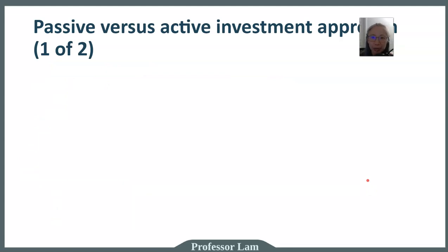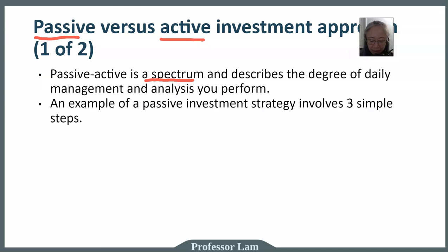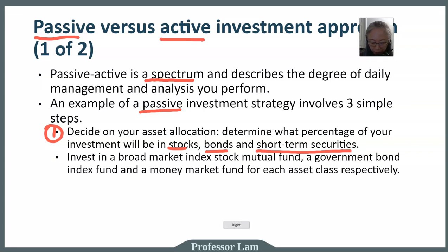It's important for you as an investor to know which type of firm works best for you. Before deciding, we need to introduce another concept: passive versus active investment. This is not a dichotomy — it's a spectrum describing how much daily management and analysis you do on your own. Here's a very common and simple passive investment strategy. It only requires three steps. Step one: decide on your asset allocation — what percentage of your money you'll put into stocks, bonds, and short-term investments like CDs or government T-bills.